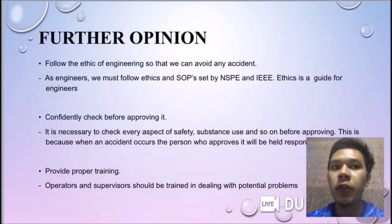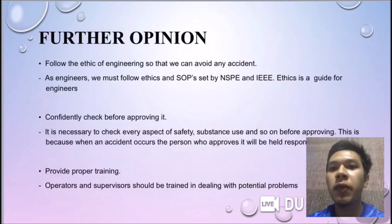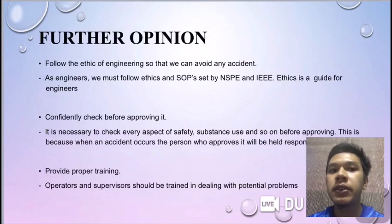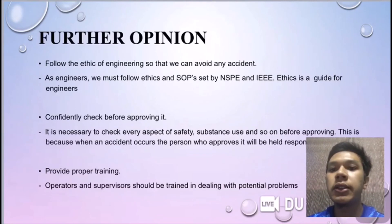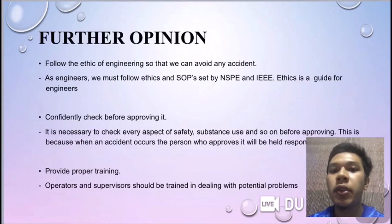Hello everyone. Today I want to discuss future options. First, we must follow the ethics of engineering to avoid any accidents. As engineers, we must follow the ethics and SOPs set by NSPE and IEEE — ethics is a guide for engineers. Second, carefully check before approving anything — it is necessary to check every aspect of safety, substance use, and so on, because when an accident occurs, the person who approved it will be held responsible. The last point is to provide proper training so that operators and supervisors can develop skills and safety awareness.